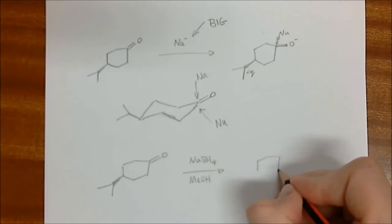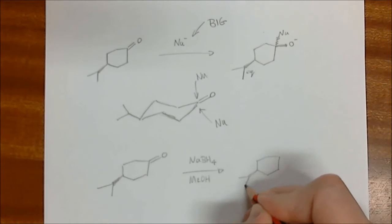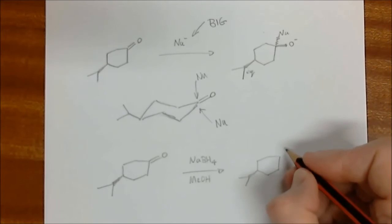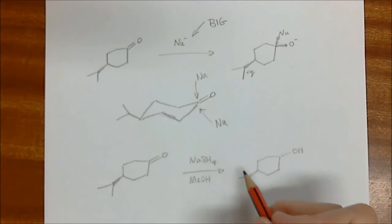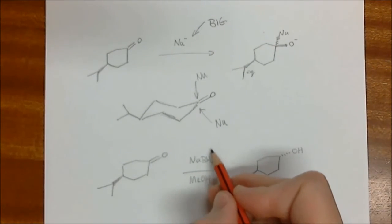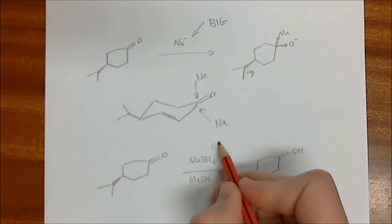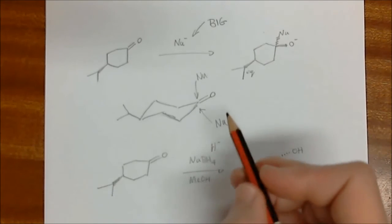And so the OH is going to end up being equatorial, which will be down. You follow that. So the hydride, this is equivalent of delivering an H minus. All right, very small reducing agent, very small nucleophile, we could think of it as.